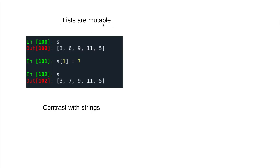One difference from strings is that lists are mutable objects. Strings are not mutable, whereas lists are mutable — the list can be changed. Once you create a list you can change the value stored at any particular index. Here, the second element of the list (index 1) is changed from 6 to 7. Contrast this with strings — you might have to use a non-mutable type or a mutable type based on what is required, and the difference is very relevant depending on the context.